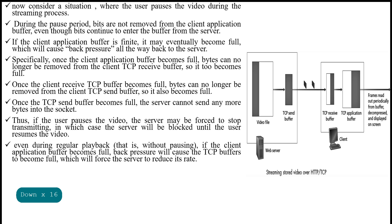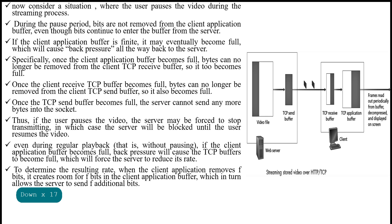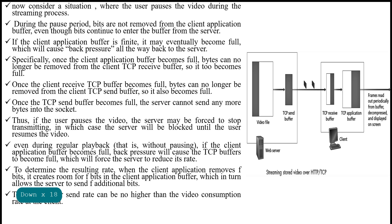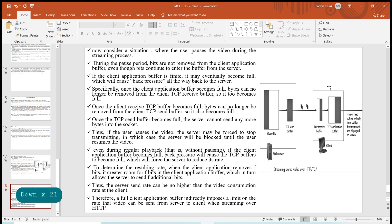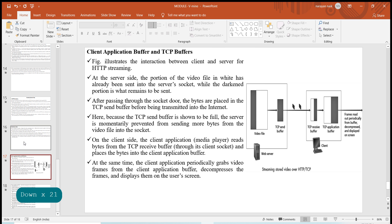Even during regular playback without pausing, if the client application buffer becomes full, back pressure will cause the TCP buffer to become full, forcing the server to reduce its rate. When the client application removes f bits, it creates room for f bits in the client application buffer, which allows the server to send f additional bits. Thus the server send rate can be no greater than the video consumption rate at the client, so a full client application buffer indirectly imposes a limit on the rate at which video can be sent from server to client when streaming over HTTP.